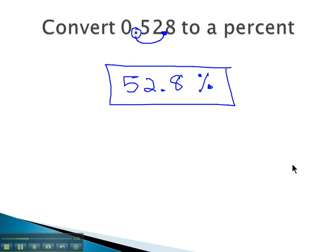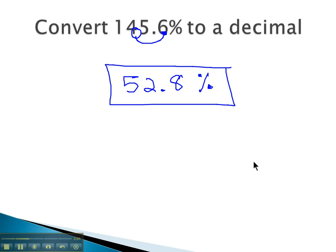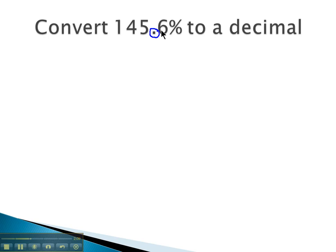Going the other direction, say we've got a percentage that we want to change into a decimal. Again, what we will do is we will move the decimal point twice. To change a percent to a decimal, we move it twice left. And that gives us 1.456 is the decimal that is equivalent to 145.6 percent.